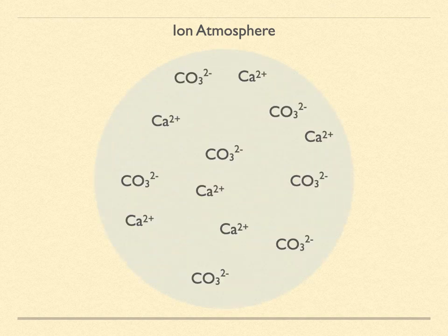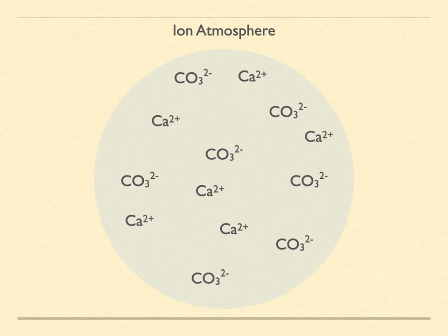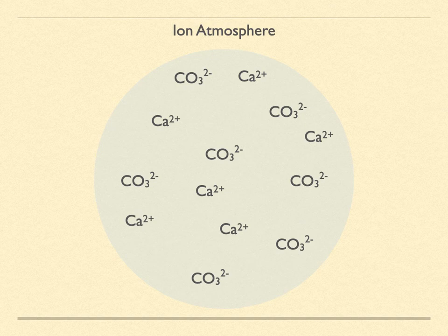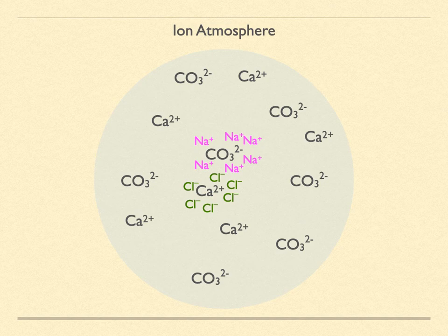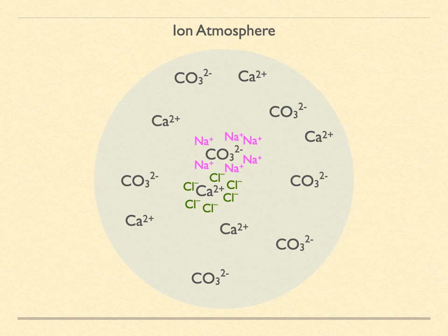Imagine a solution of calcium 2 plus ions and carbonate 2 minus ions. They like to combine and precipitate out of solution as calcium carbonate or chalk. But what if the solution contained a large amount of sodium chloride as well? Now the sodium ions would surround the carbonate ions, while the chloride ions would surround the calcium ions. Now it would be more difficult for the calcium and carbonate to get together. Their chemical reactivity would change because of the ion atmospheres created by the additional ions in the solution. The ions organize themselves this way because of the Coulombic attraction between oppositely charged species.